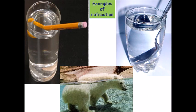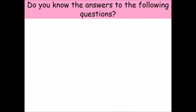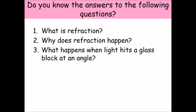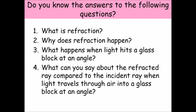If you look at these three pictures, they don't look right. That polar bear looks like its back has been cut off. That pencil looks like it curves. And that spoon just doesn't seem to line up. Why is this happening? This is due to refraction. Do you know the answers to: What is refraction? Why does refraction happen? What happens when light hits a glass block at an angle? And what can you say about the refracted ray compared to the incident ray when light travels through air into a glass block?